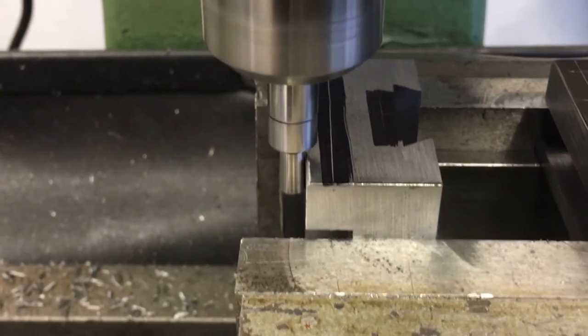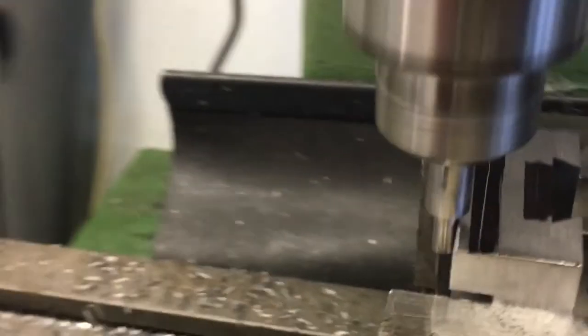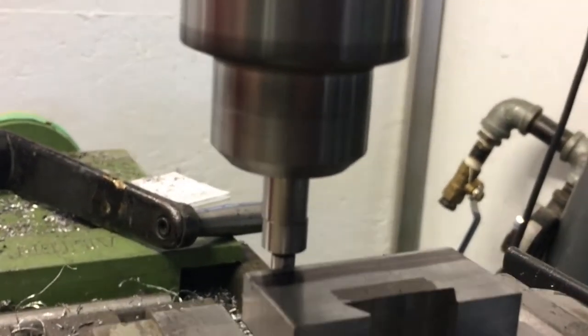The edge finder I'm using measures 200 thousandths on the contact diameter. To bring the spindle to the center, the table needs to move 100 thousandths.